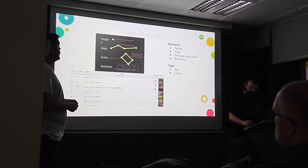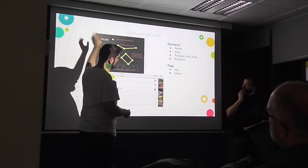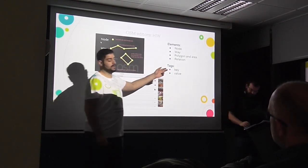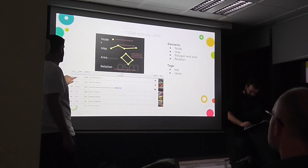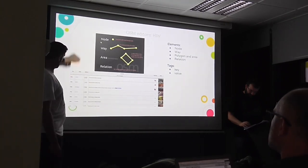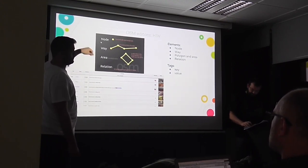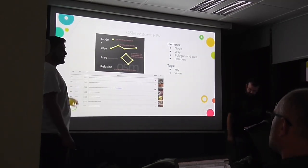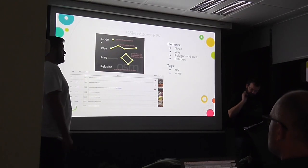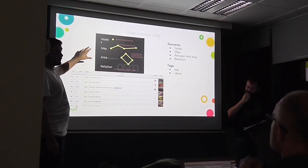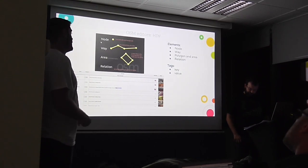There are also tags, formed with a key and a value. You can say a node is a tree, and which kind of tree — maybe a pound tree. Or a node is a shop — specifically a bakery. You can specify anything you can imagine, like this shop has Wi-Fi, with key 'Wi-Fi' and value 'yes.' A node, way, area, or polygon can have more than one tag, referring to different items and attributes.